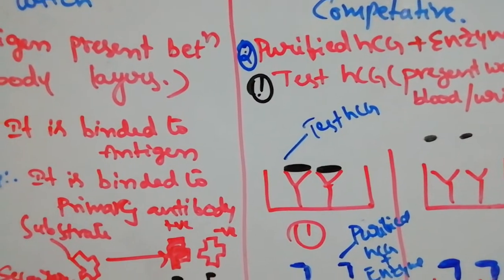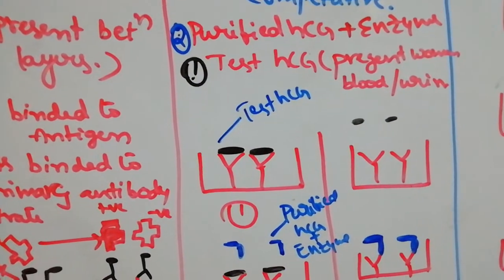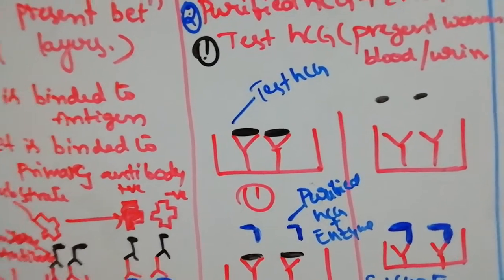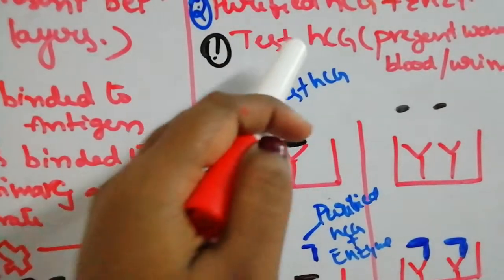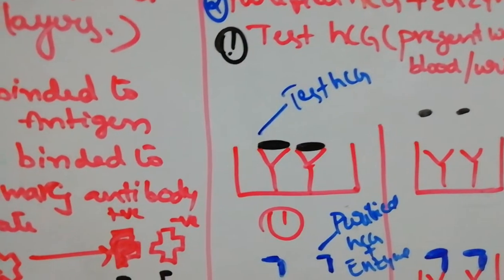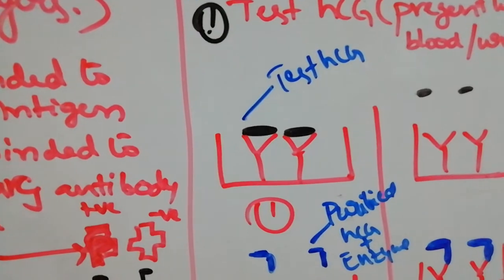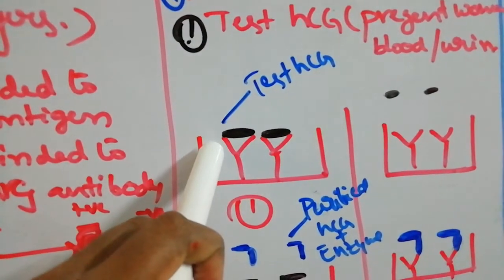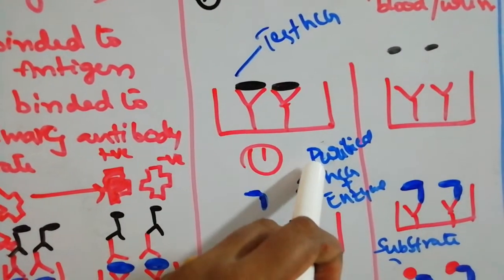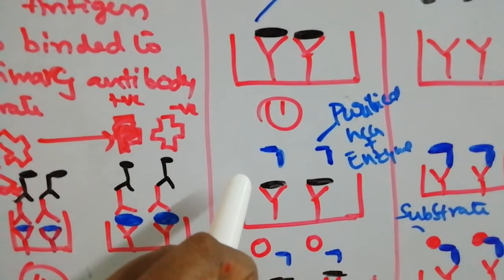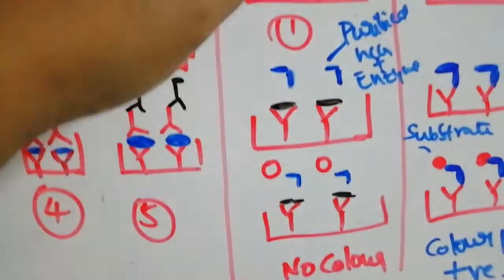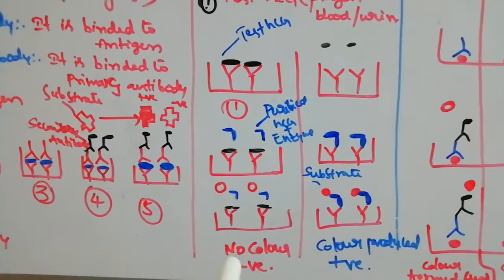The next method is the competitive method. Here there is competition between purified HCG with enzyme and test HCG from a pregnant woman's blood or urine. HCG, human chorionic gonadotropin, is present only in pregnant women's blood and urine — it is released by the placenta. If HCG is present in the sample, it binds to the antibodies. When purified HCG with enzyme is then added, it cannot bind because the antibody sites are already occupied. Substrate is added, no color is produced, meaning pregnancy is positive.